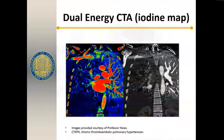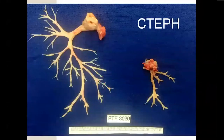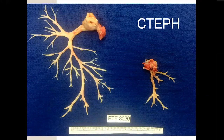A dual energy CT scan with iodine mapping can give very similar information. You can see the absence of perfusion in the right lung with fairly normal perfusion and some defects in the lower lobe — a new modality now available to us. If we perform pulmonary thromboendarterectomy surgery, we can remove a cast of the thrombus and open up the pulmonary arteries, reestablishing flow into the lung, which has a dual blood supply and can participate once more in gas exchange.